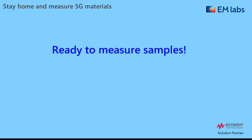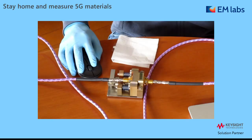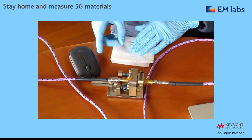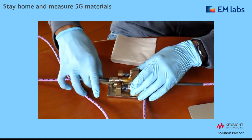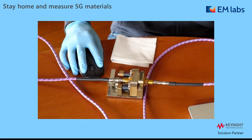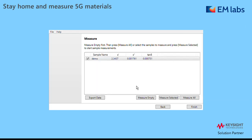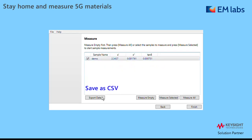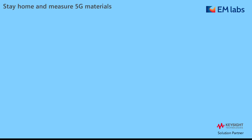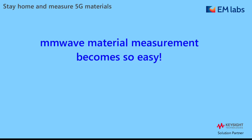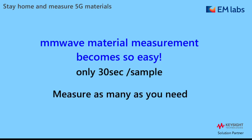Now we are ready to measure samples. Open the resonator slightly, insert the sample, and start measurement. Results are displayed, and of course you can save as CSV. I think you'll find that mmWave material measurement becomes so easy — it takes only 30 seconds per sample, so you can measure as many as you need.